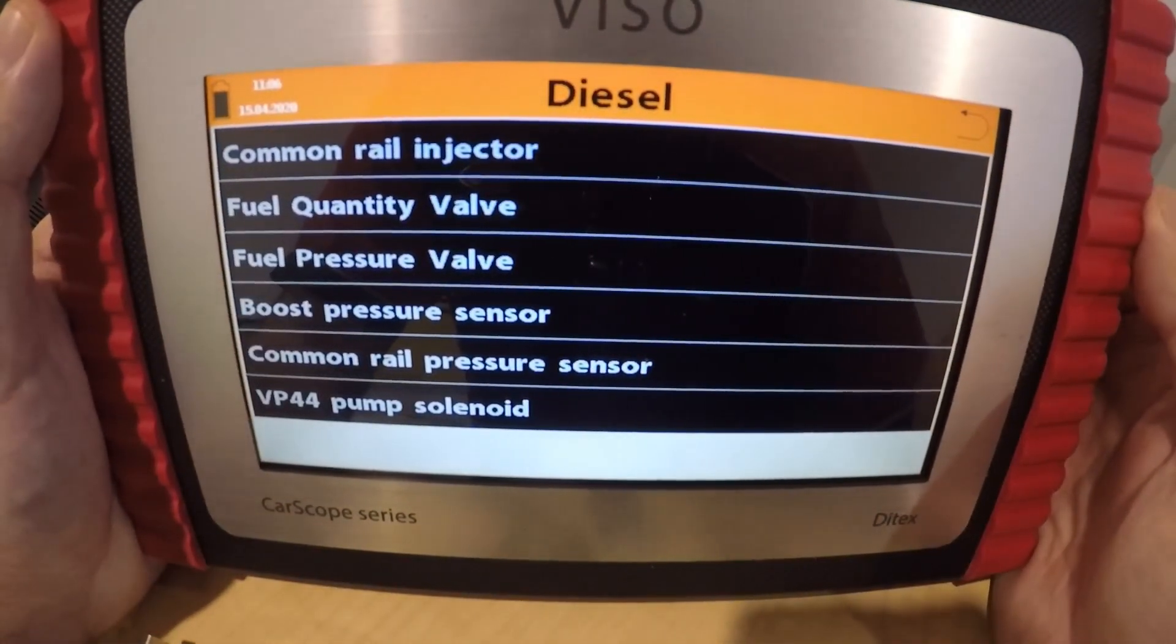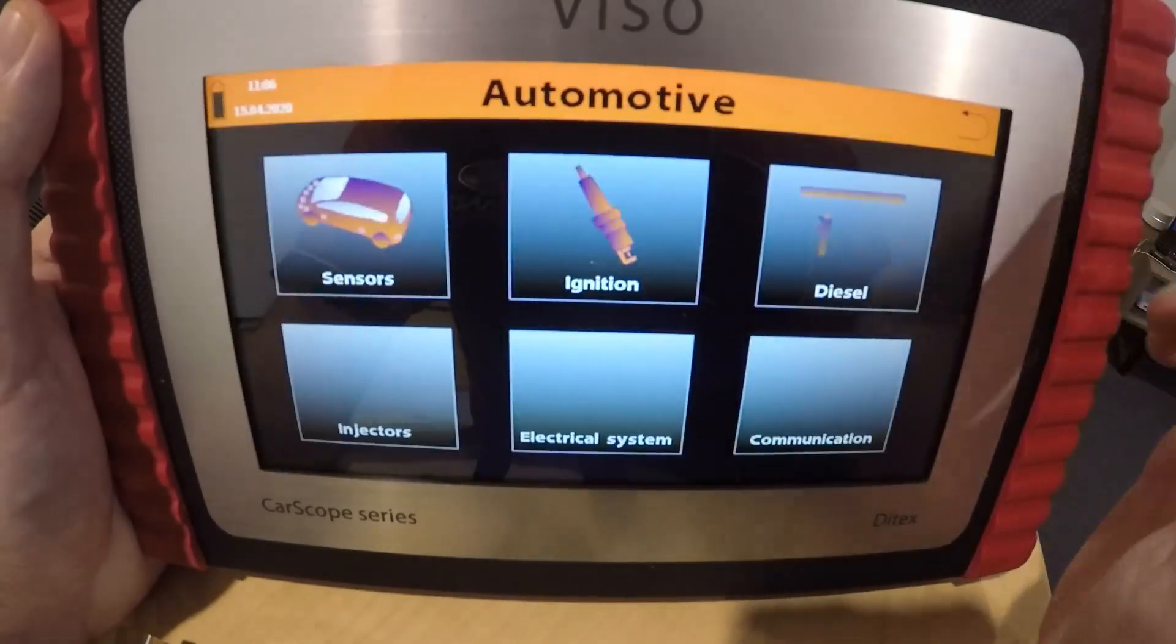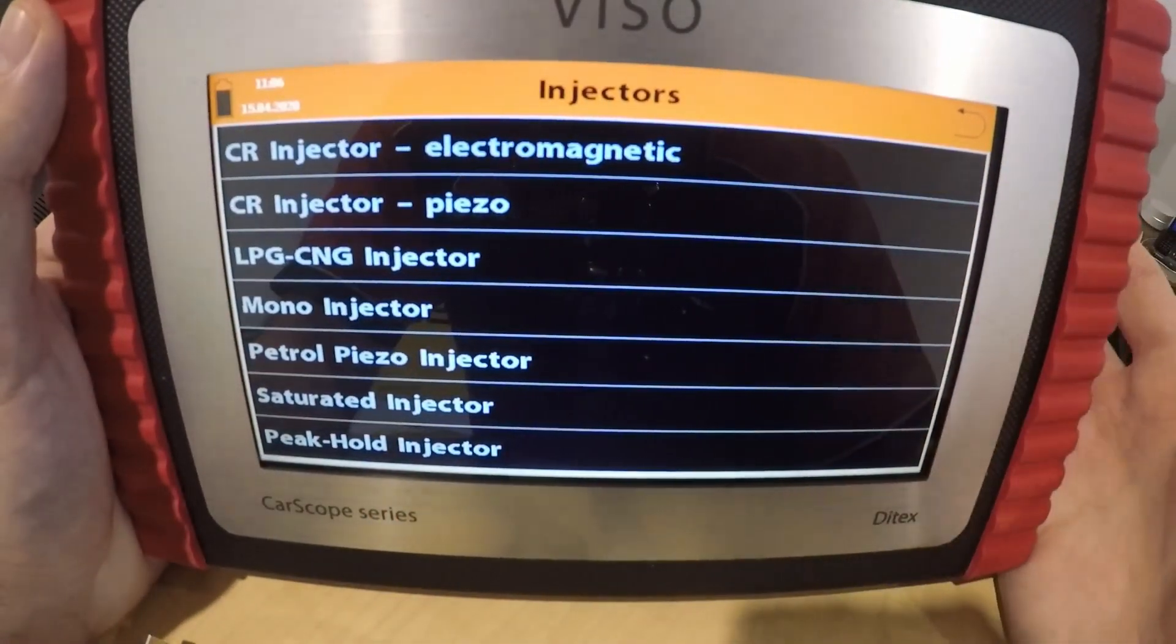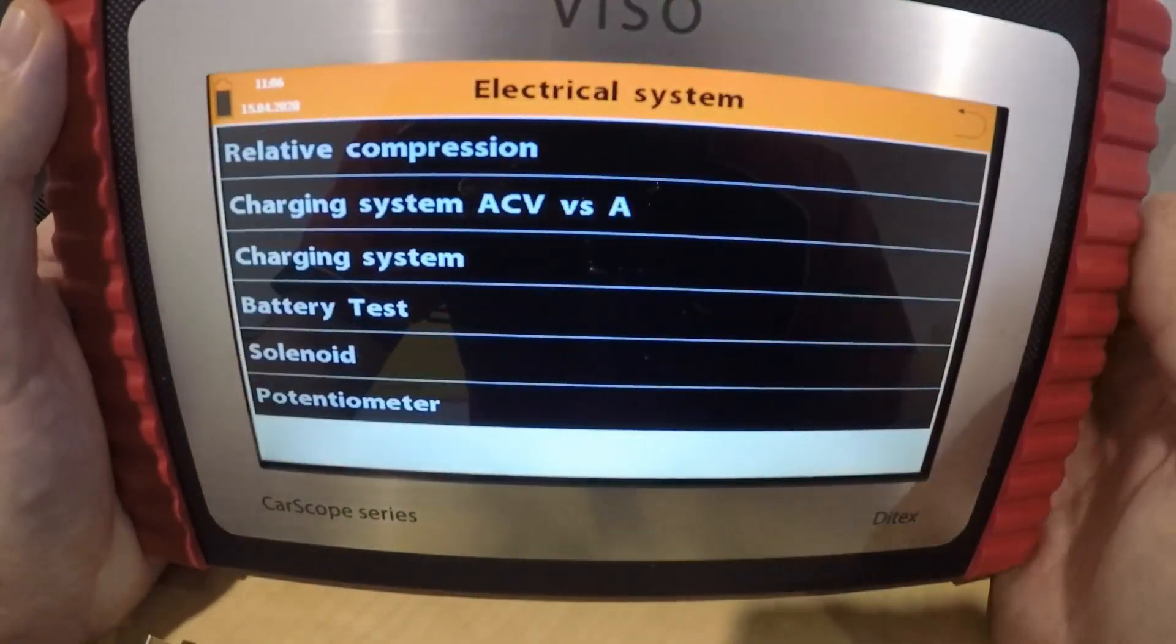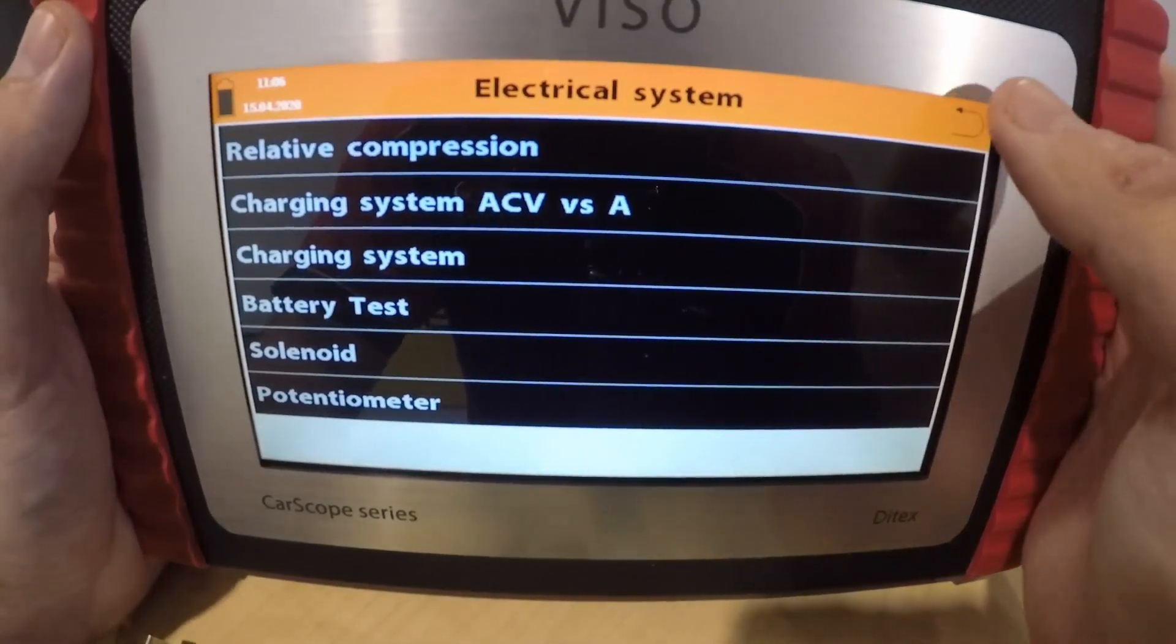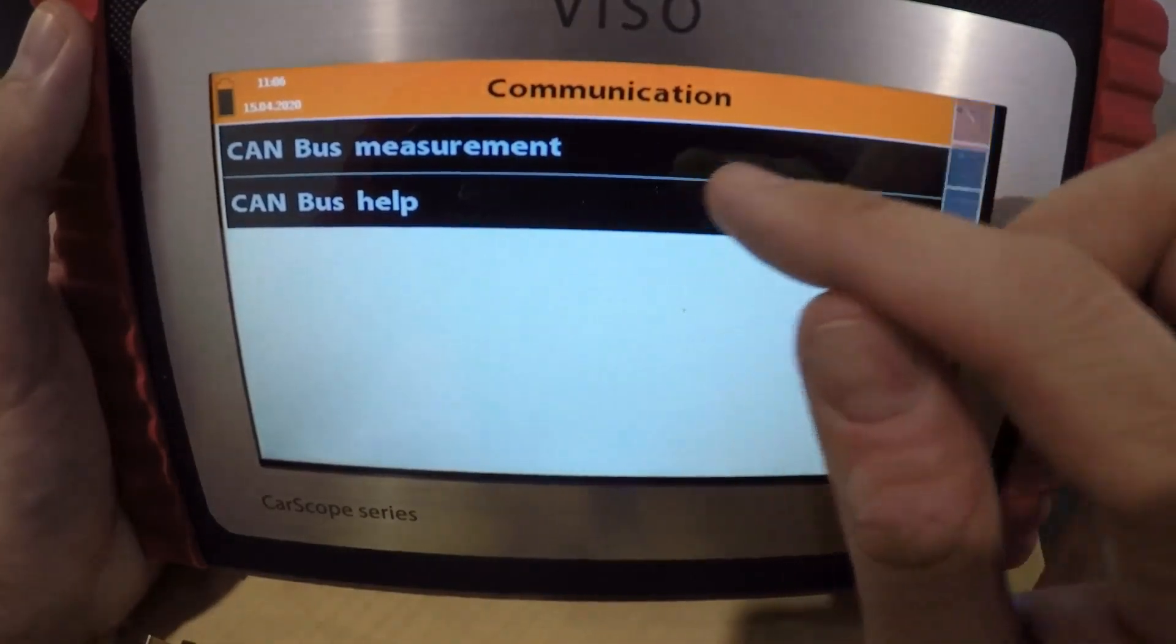Diesel. Common rail injector, fuel quantity valve, fuel pressure valve, boost pressure sensor. I'm not going to go into all these but you can see what the presets are there. Injector type, I mean they're all available there. Electrical system, relative compression, charging system, battery test, solenoid, potentiometer. Communication, CAN bus, CAN bus help.